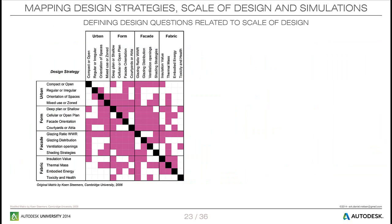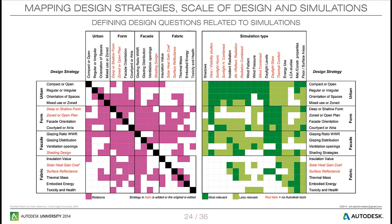Zooming in to be a little more specific, this matrix could be used — it is from the same book. The matrix tries to make relations between the scale of design and design strategies that I showed in the previous slide. So I didn't have to reinvent the wheel — I just reused already known literature and methods. Again, I thought it was necessary to customize and adapt the metrics to my way of thinking. Especially, I thought I was missing design questions or strategies specifically at the fabric level. As seen on the right, I have extended the matrix so it also creates a relation to simulation types.